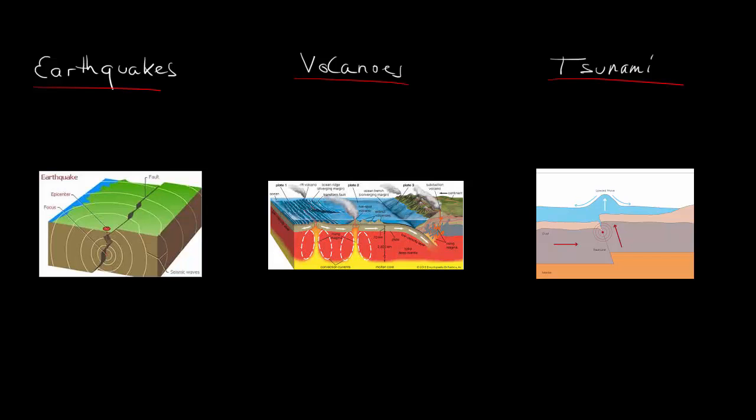In this video, I'll focus on the different types of disasters that happen at different boundaries. We have earthquakes, volcanoes, and tsunamis. These three are caused by different boundaries.